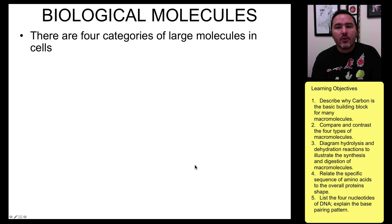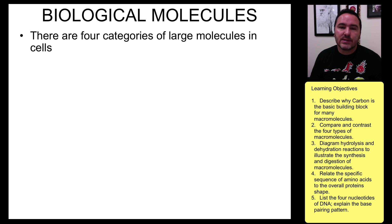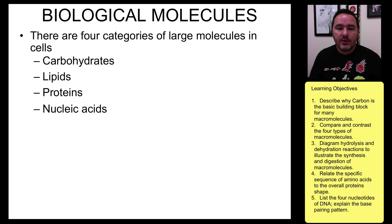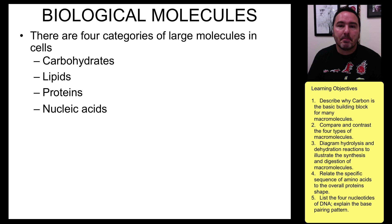There are four categories of large molecules in cells: the first is carbohydrates, then lipids, proteins, and nucleic acids. We'll look at these one at a time.